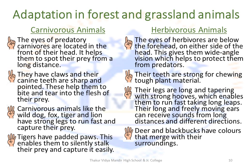Moving on to herbivorous animals: the eyes of herbivores are on either side of their head, giving them a wide angle of vision which helps them protect themselves from predators. Their teeth are strong for chewing tough plant matter. Rabbits have strong incisors which help them cut grass and eat it easily. Legs of herbivorous animals are long with tapering strong hooves, which helps them run fast and take long leaps. Their long and freely moving ears can receive sounds from long distances and different directions.